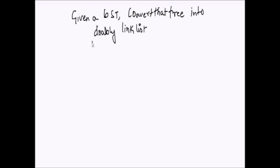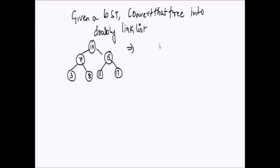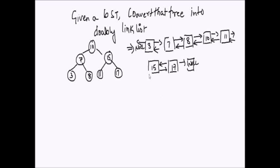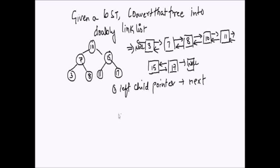For example, if this is my tree, my output should be a doubly linked list in sorted order. There are two conditions given: the left child pointer should point to the next node in the doubly linked list, and the right child pointer should point to the previous node in the doubly linked list.